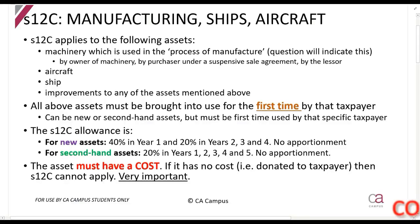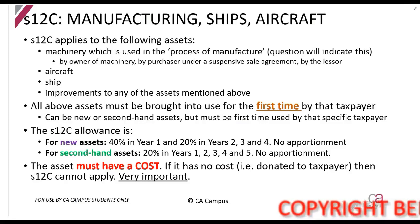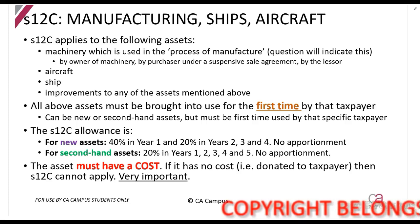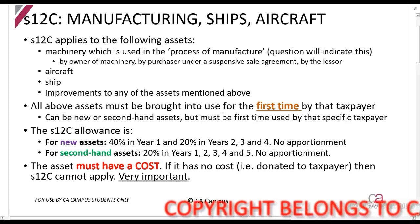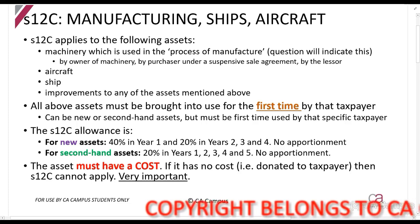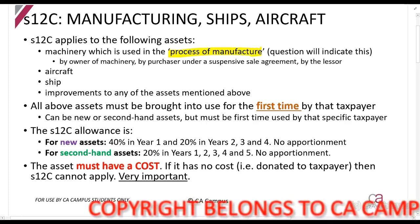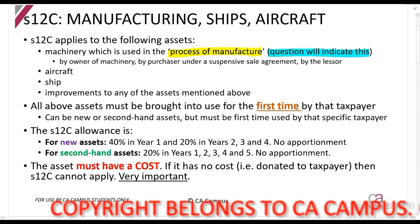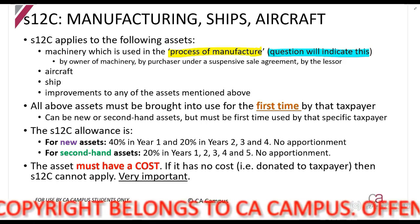We now look at Section 12C. This is a very popular section that we see basically all the time. It applies to manufacturing assets — so if machinery is used in the process of manufacture, which the exam will tell you, then you can claim this allowance.